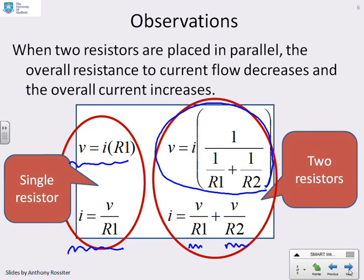And the key summary is when you have two resistors in parallel, the overall resistance to current flow decreases and the overall current increases.